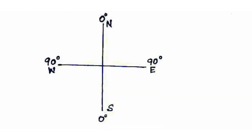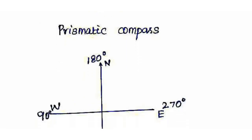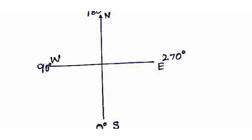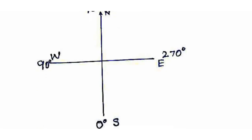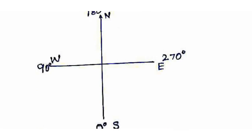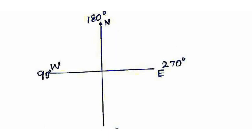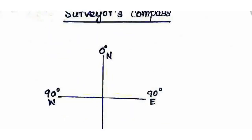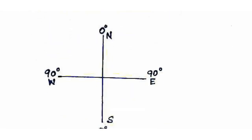In the case of the prismatic compass, the whole circle bearing system is followed. In the prismatic compass: South is zero degrees, West is 90 degrees, North is 180 degrees, East is 270 degrees. For the surveyor's compass: North and South are zero degrees, East and West are 90 degrees.